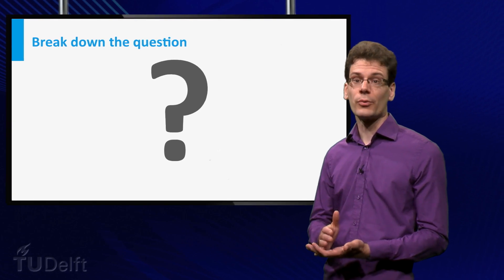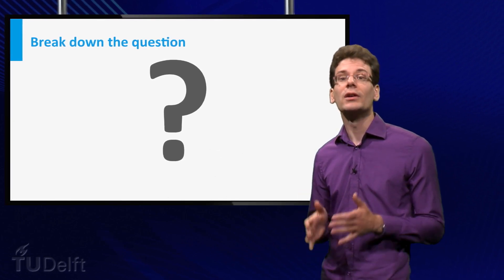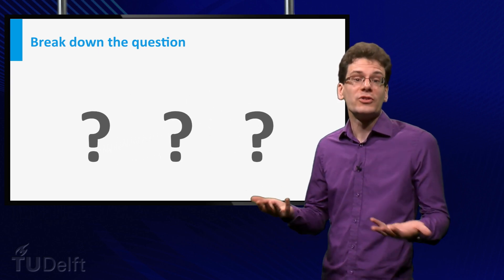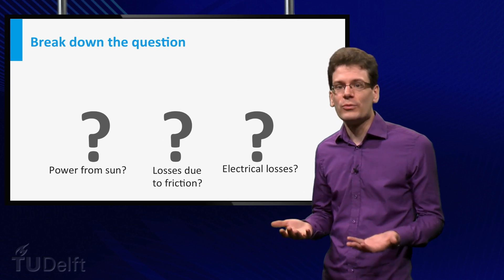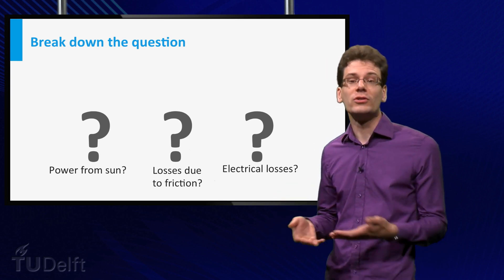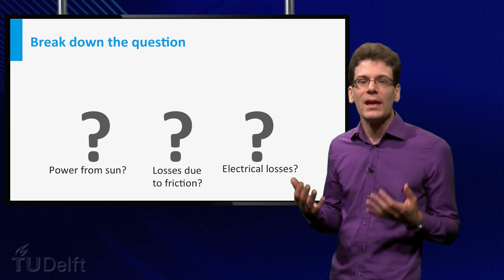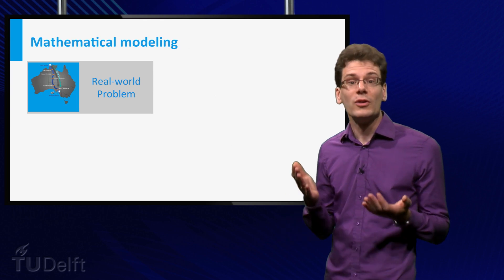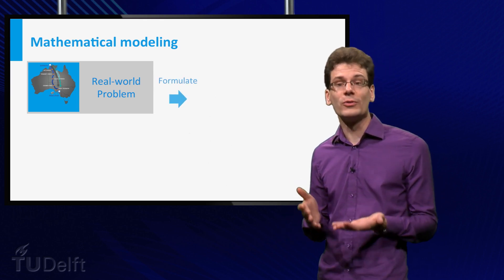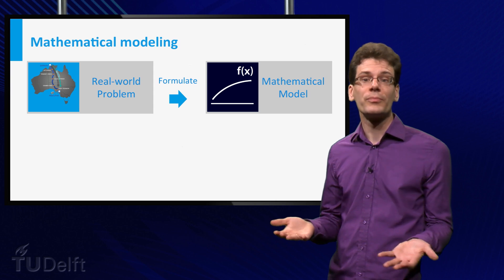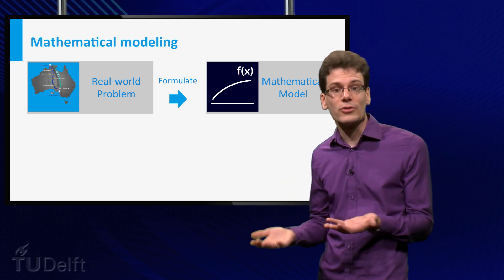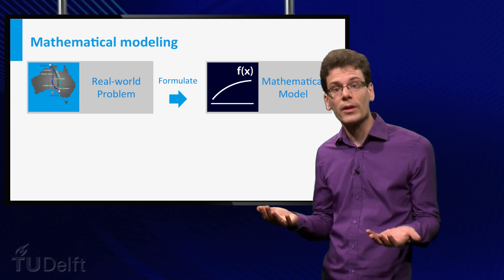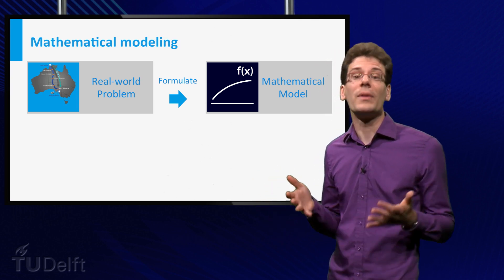The first step with such a problem or challenge is analysis. You try to break down the question into smaller and more specific questions like, how much power can you harvest from the sun? What is the influence of power losses like air friction, roll friction, and battery loss? Here starts the modeling cycle that is used in science, design, and engineering. You have a real-world problem and you try to reformulate it in terms of a mathematical model. A mathematical model describes the relation between the different parameters that are of influence in this real-world problem. Such relations are described by mathematical functions.